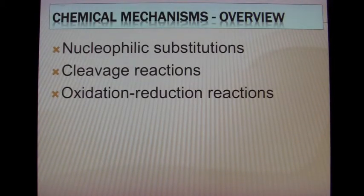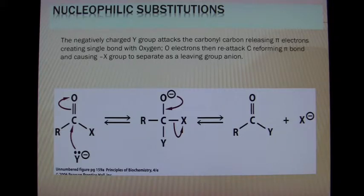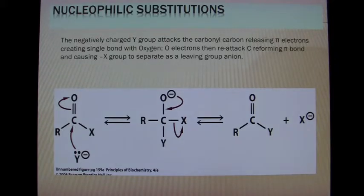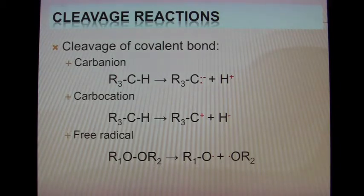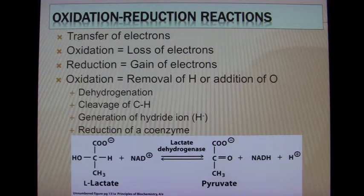Another overview that we should touch on is nucleophilic cleavage and redox reactions. Nucleophilic substitutions are shown here, where the nucleophile comes in to attack the carbonyl carbon, ultimately kicking off the leaving group. With cleavage reactions, the key takeaway is that we can have carbanions, carbocations, or the dreaded free radicals. With redox reactions, it's important to remember the acronym LEO-GER: loss of electrons equals oxidation, and gain of electrons equals reduction.